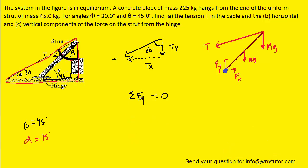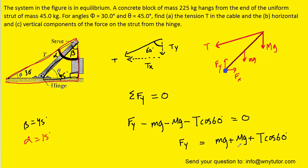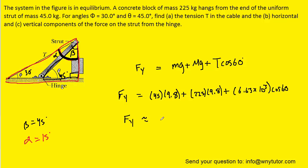For part c, the sum of the forces in the y direction is also zero. We have fy pointing upward (positive), the two mg forces pointing downward (negative), and the y component of tension, which is adjacent to the 60-degree angle — so T multiplied by cosine of 60 degrees, also negative because it points straight down. Setting the equation equal to zero and solving for fy by moving all other terms to the right-hand side, then plugging in the known masses, g, and tension, we get approximately 5.96 × 10³ newtons.